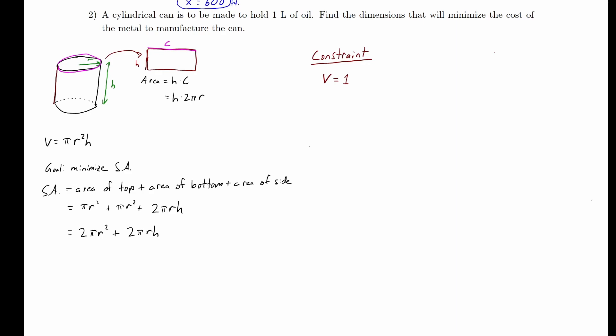We're told the can holds 1 liter of oil. It turns out 1 liter equals exactly 1 cubic decimeter, so if we measure lengths in decimeters, we can say the volume equals 1. Our constraint is pi r squared h equals 1. We need to decide which variable to solve for. Solving for h only requires one division, whereas solving for r would require a division and then a square root — which we'd prefer to avoid. So we solve for h: h equals 1 over pi r squared.